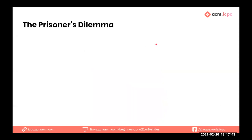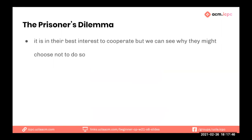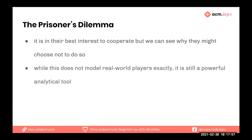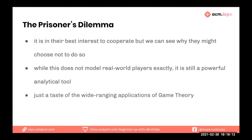This leads us to why game theory is important. Even if it's in both players' best interest to cooperate, we can see why they might choose not to — because they're optimizing for the worst case. While this doesn't model real-world players exactly (players have some cooperation bias), game theory is still a powerful analytical tool. It allows us to analyze problems more analytically, figure out what players might choose, and tailor strategies to get more payoff.